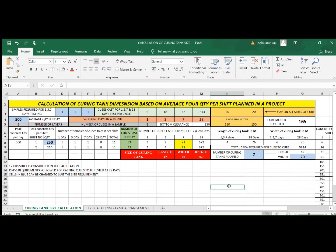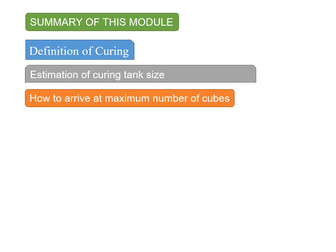To summarize this module: we talked about the definition of curing, how to estimate the size and number of curing tanks required, fixing a specific dimension depending upon land availability, and getting a rough estimate of how many cube molds are required in the project to ensure that each and every pour is sampled based on IS 456 requirements to cast the number of cubes which need to be tested at 28-day compressive strength.